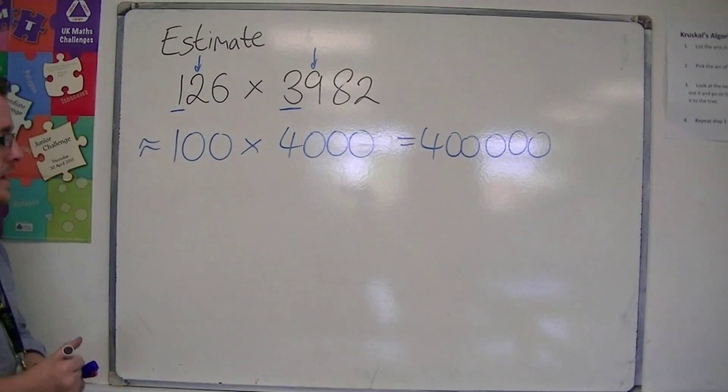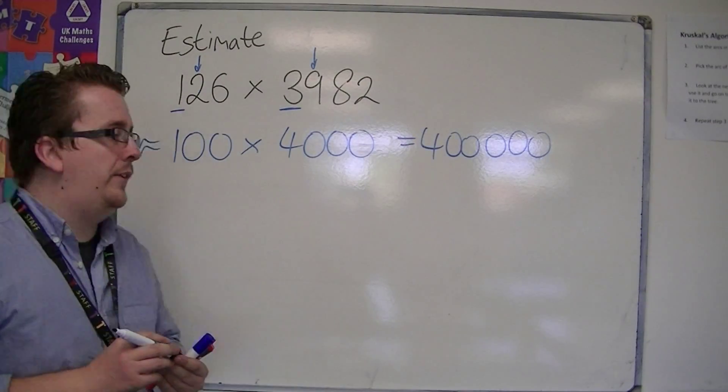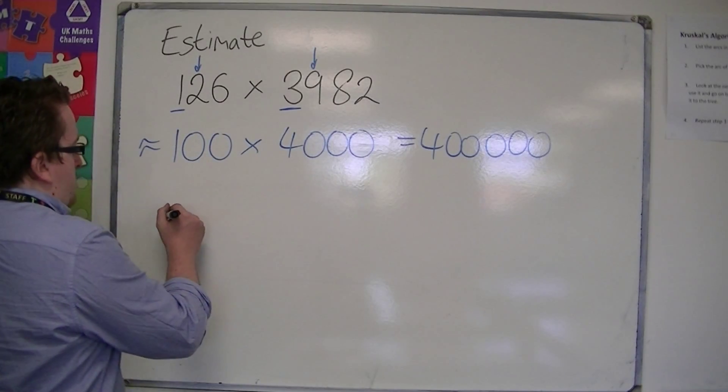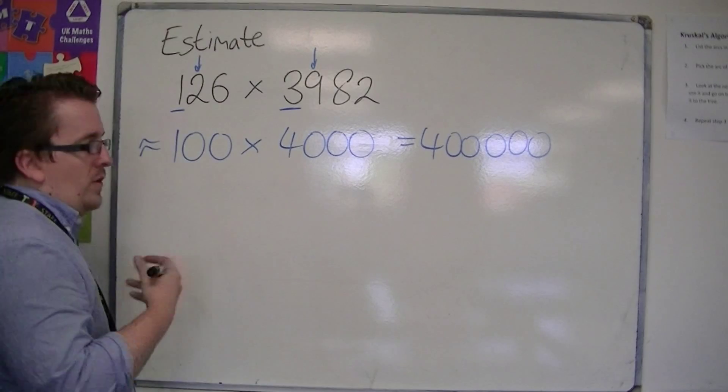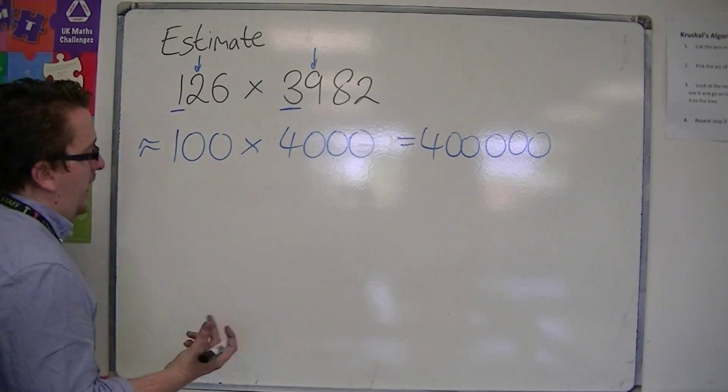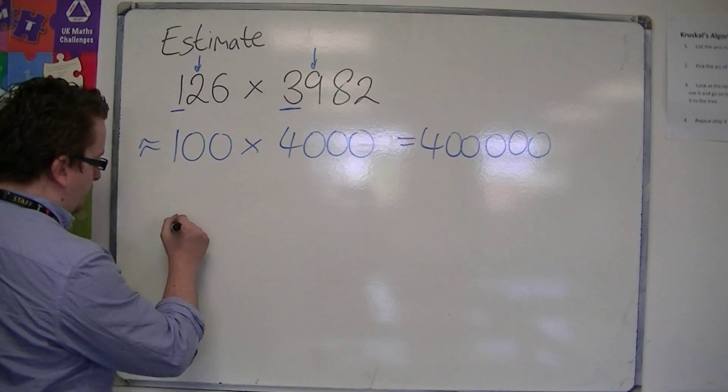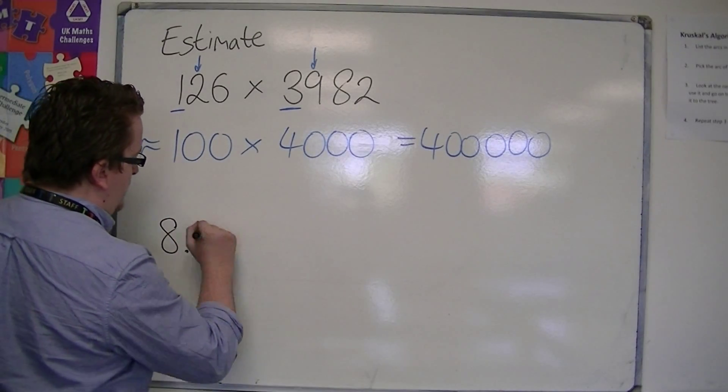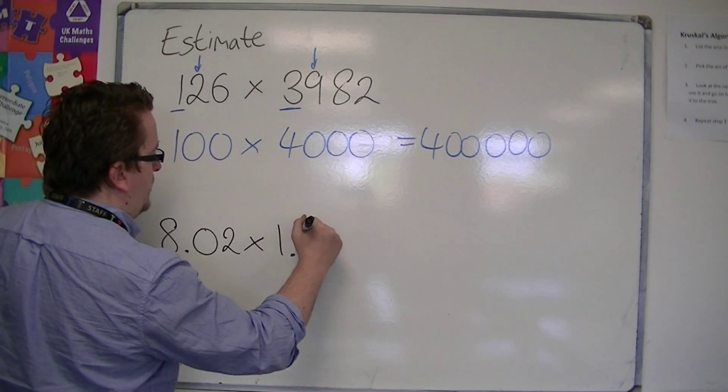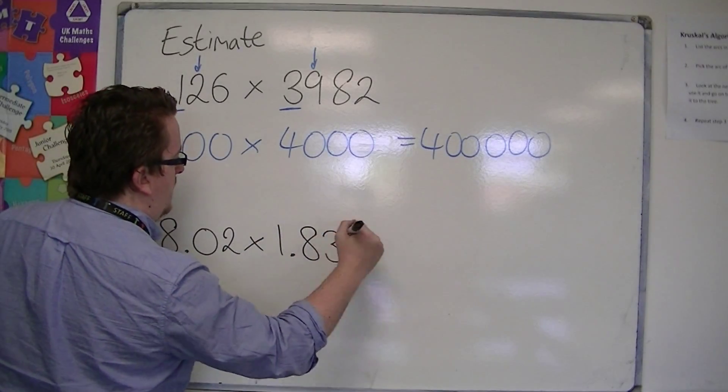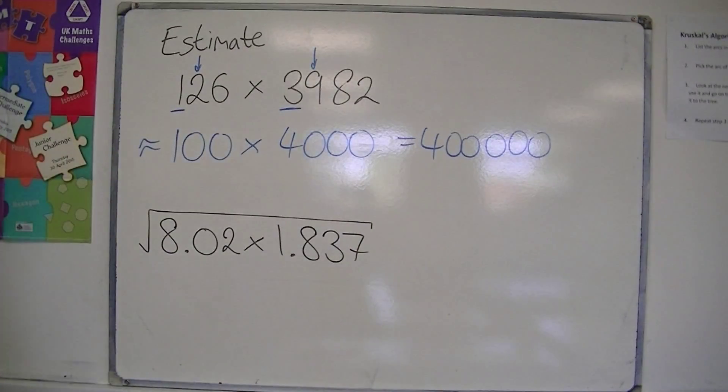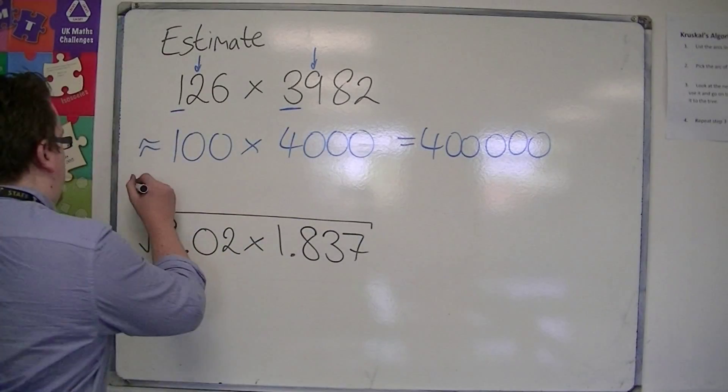So if I had something like, let's say I had something like 8.02 times 1.837 and I'm going to square root the answer, and I want to estimate this.